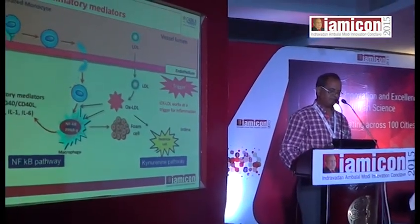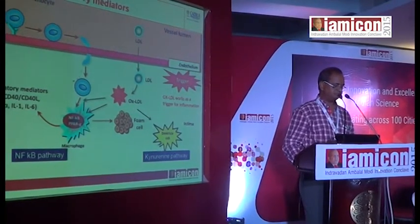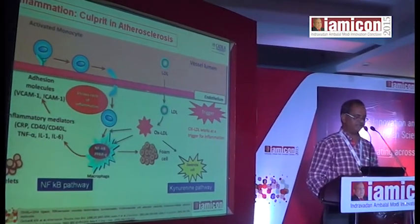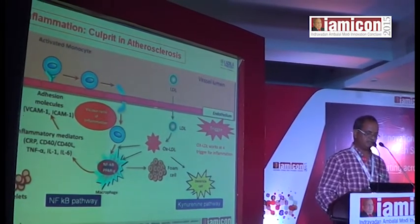Inflammation basically starts with the entry of monocytes inside the endothelium in the tunica intima. LDL enters the intima and gets oxidized. Oxidized LDL works as a trigger for inflammation, activating monocytes which convert into macrophages by stimulating the NF-κB pathway, PPAR-gamma agonist pathway, or by stimulating dendritic cells. The NF-κB pathway is stimulated by macrophages and the kynurine pathway by dendritic cells. Stimulation of macrophages leads to release of inflammatory mediators like CRP, CD4, TNF-alpha, IL-1, and IL-6, and further releases adhesion molecules like VCAM and ICAM-1, which starts the vicious cycle of inflammation.